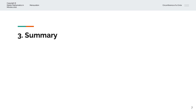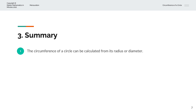To summarise, the circumference of a circle can be calculated from its radius or diameter. The circumference c equals 2 times pi times r for the radius, or pi times d for the diameter. Thank you very much for watching — this is Master Mathematics in Minutes.